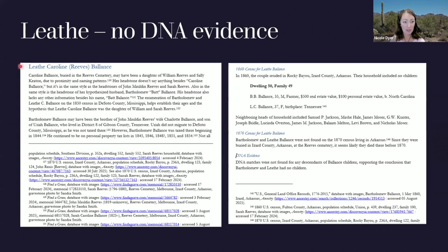The main section header is simply the name of the proposed child of Sally Keaton Reeves. I talked about the starting point for that child, then what documentary evidence was found, followed by at least one sentence or paragraph discussing DNA evidence, since that was the focus for this report. For example, for Letha, no DNA matches were found for any biological children, supporting the conclusion that Bartholomew and Letha had no children — the negative search in DNA corroborated the documentary evidence.